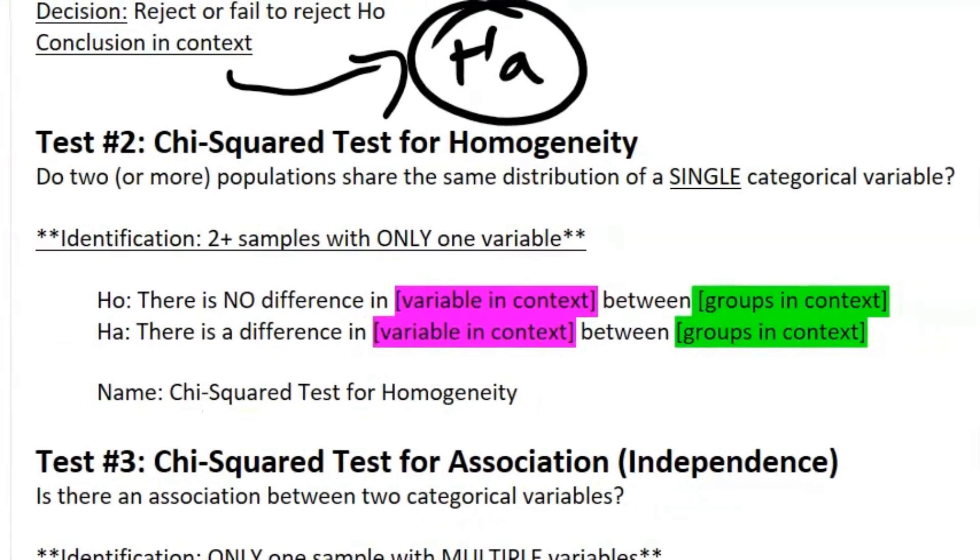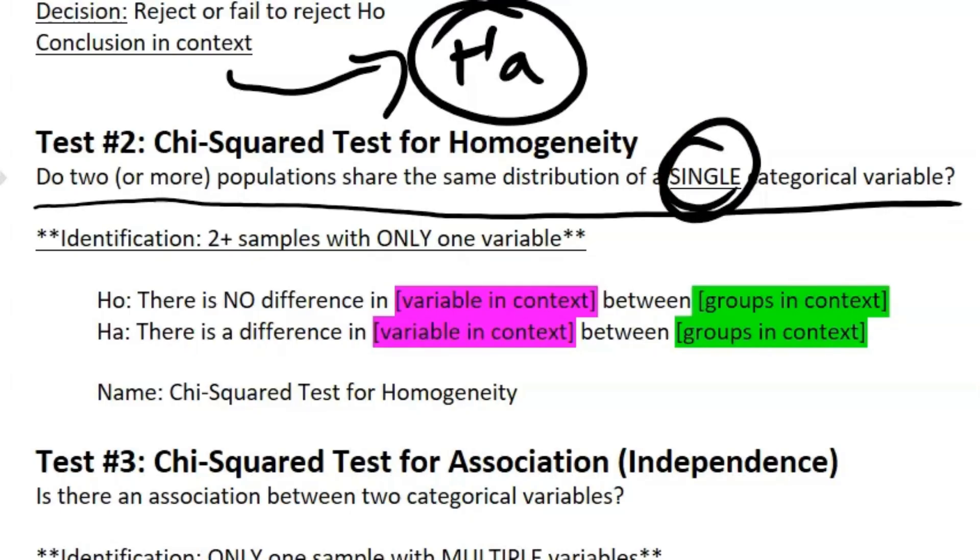Let's start off with the chi-squared test for homogeneity. The key question here is: do two or more populations share the same distribution for a single categorical variable? This is very important—you have one variable of interest. How you're going to identify this is you're going to have two or more samples with only one variable.